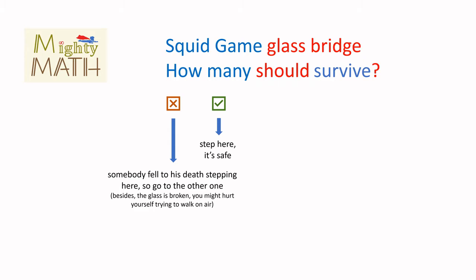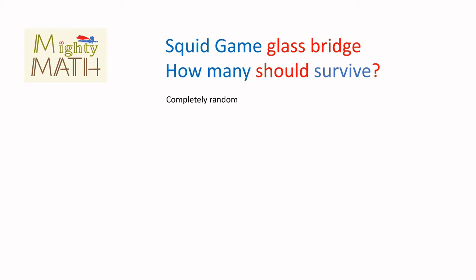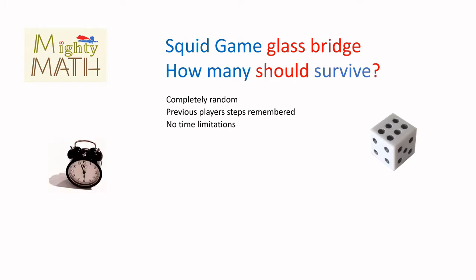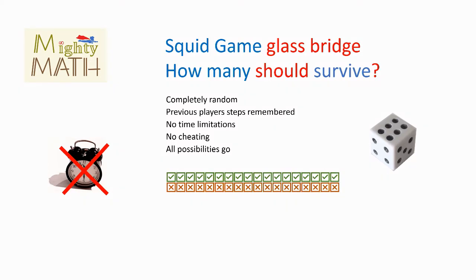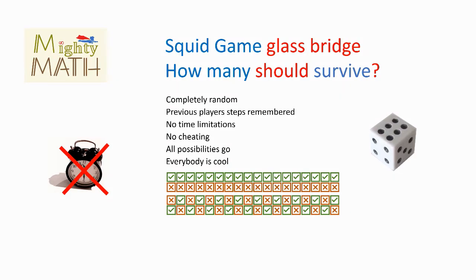Completely unlike in the game. For this calculation, we will assume a few things. All choices are random and the players have no way of distinguishing between the two types of glass. All the players remember previous players' moves. There are no time limitations. There is no possibility of cheating, crawling on the steel frame and so on. We are not trying to avoid neat patterns like 18 consecutive steps on the left or one right, one left and so on. And we will ignore all problematic mental aspects and irrational behavior performed by people on the verge of death trying to survive.